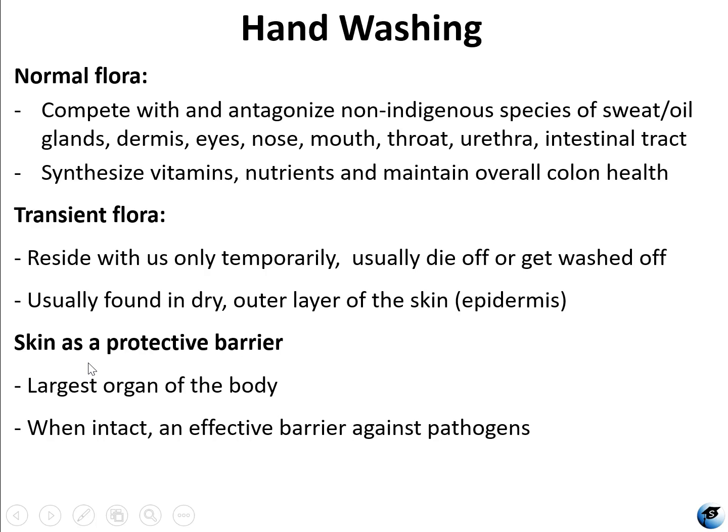Transient flora are different than normal flora. These are temporary residents of the human body — microorganisms that are transmitted from the environment or from another host. Unlike normal flora of the skin, which reside in the dermal layer, transient flora live on the outer epidermal layer. Because the epidermis is quite dry and acidic, it's difficult for transient flora to reproduce and survive there, so they will usually die off or get washed away, especially when good hand-washing technique is employed. Transient flora may be, but are not always, pathogenic.